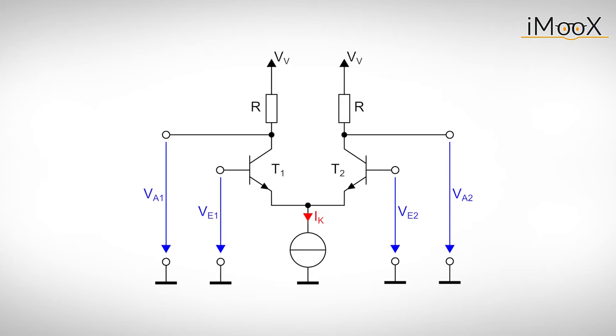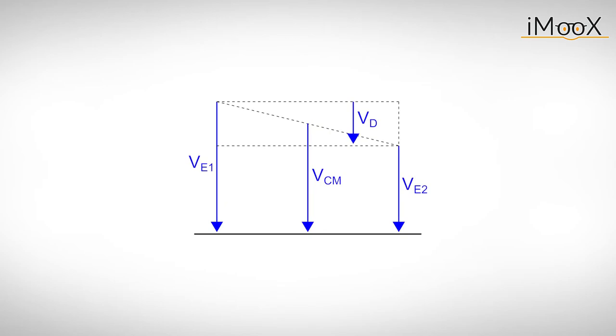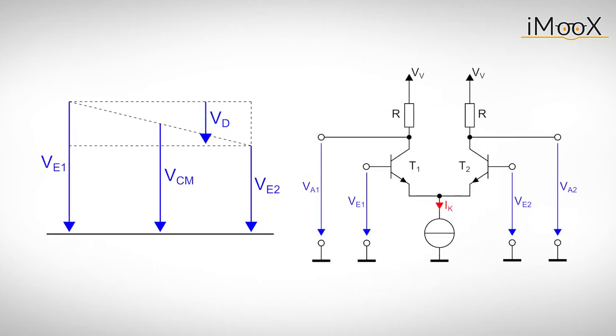In order to understand how a differential amplifier works, we could calculate the impact of the individual input voltages on each output. But there is a much more convenient way to investigate the behavior of differential amplifiers. Instead of the actual input voltages VE1 and VE2, we use a transformation to obtain the common mode and differential mode voltages VCM and VD. The common mode voltage VCM represents the mean voltage of both inputs. The differential mode voltage VD is the difference between VE1 and VE2. Expressing the input voltages this way will make the upcoming analysis of the differential amplifier much easier.